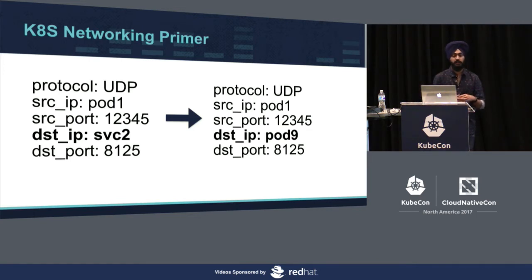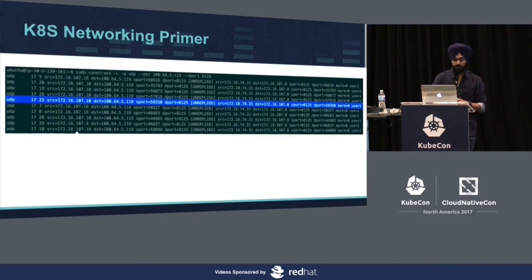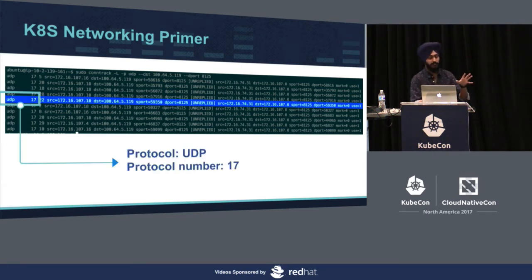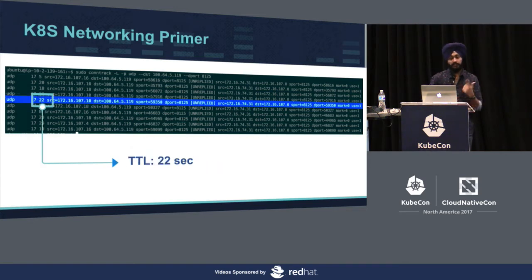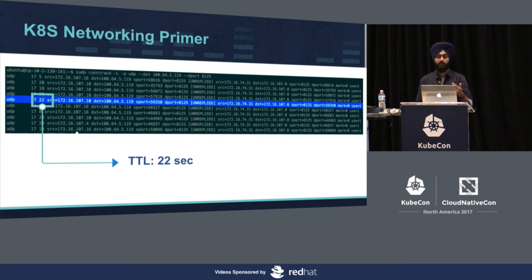The entry stores the source and destination IPs and ports — here the destination is the Statsy service IP and destination port is the Statsy port. IP tables has a rule that if the destination IP is a service IP, change it to one of the pod backends behind the service. The first column is the protocol number and name. In case of TCP it will be TCP with protocol number one. Then we have the TTL — how long this entry is valid unless there is more activity on the same socket pair.